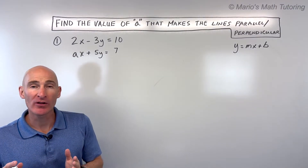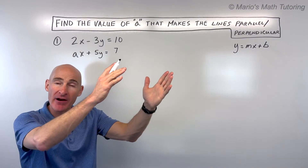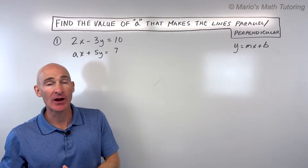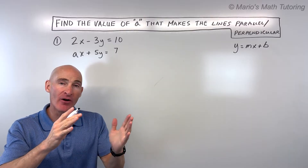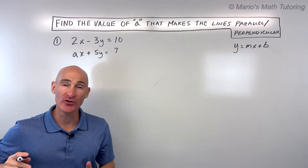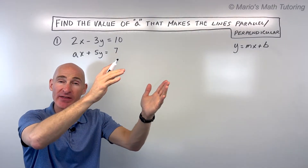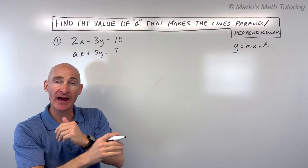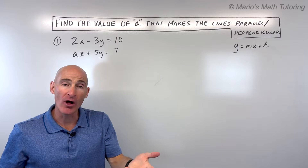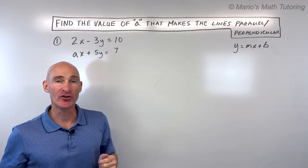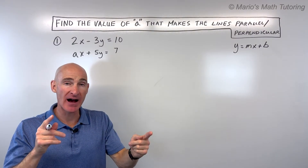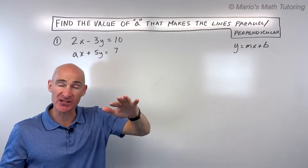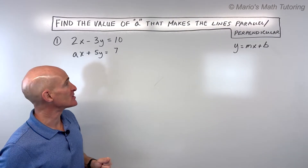In order to determine whether lines are parallel or perpendicular, we have to find the slope of the lines. If the lines are parallel, they have the same slope — they're going up at the same rate, which is why they don't cross. If they're perpendicular, meaning they form a 90-degree right angle, the slopes are opposite reciprocals of each other: the signs are opposite — one positive, one negative — and you flip the fraction.